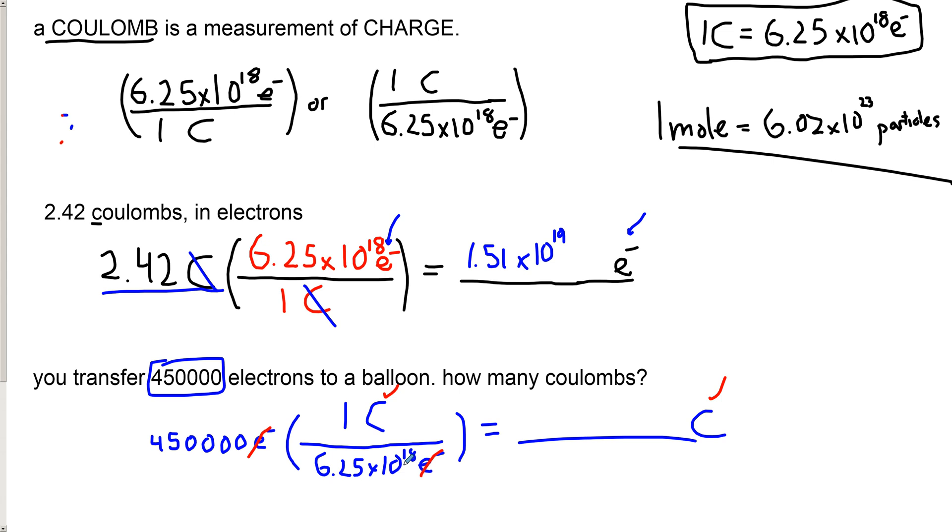And we're going to get a number that's very small, which is 7.2 times 10 to the minus 14 coulombs. So just a super, super, super minuscule amount of coulombs, which makes sense because there's an enormous number of electrons in a coulomb. This looks like a big number, but it's nowhere near 10 to the 18.